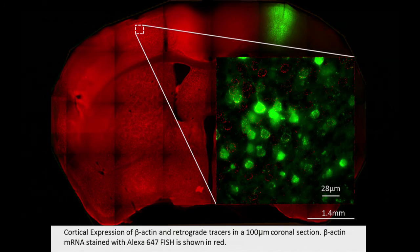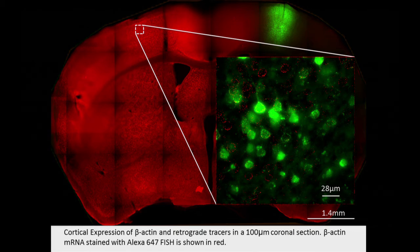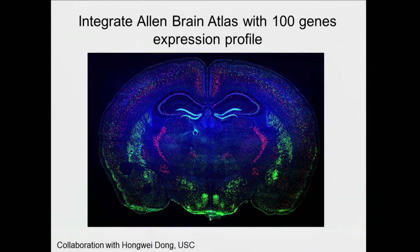We've been applying this method to many different sample types. One focus is brain slices. Here is a mouse coronal section stitched together from many microscopy images. Zooming in on a region, we can see individual cells with nuclei labeled by a tracer injected in one part of the brain and projected all the way across to the other side. We can count each dot — each an individual RNA molecule — in this brain slice. We're working on 100-gene multiplexing directly in the brain, and we hope to overlay this expression profiling on the connectome and Allen Brain Atlas, in collaboration with Hong Weidong.